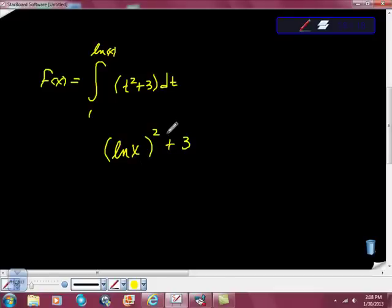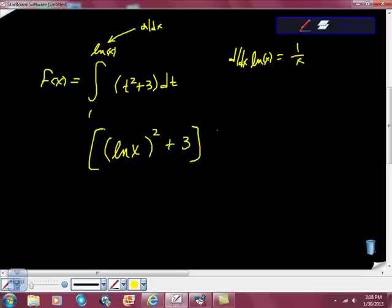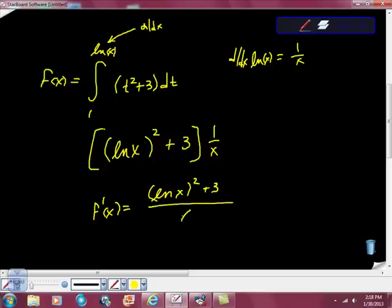The last thing you have to remember to do is take d/dx of that. So d/dx of ln of x is just 1 over x. I'm going to multiply this whole thing by 1 over x and find out that f prime at x is equal to ln of x squared plus 3 all over x.